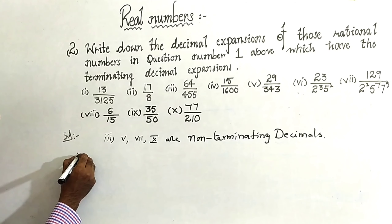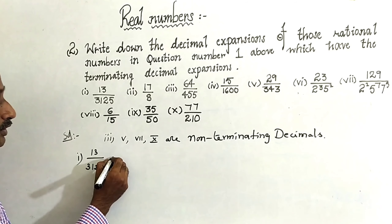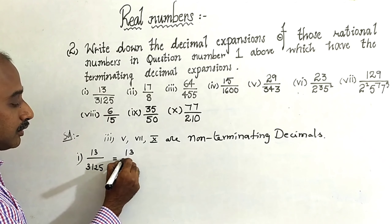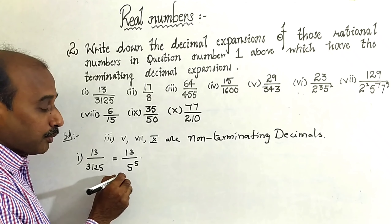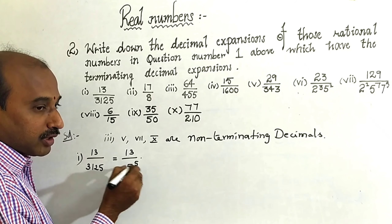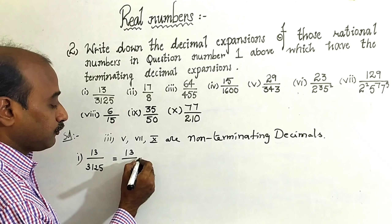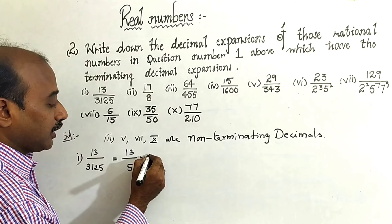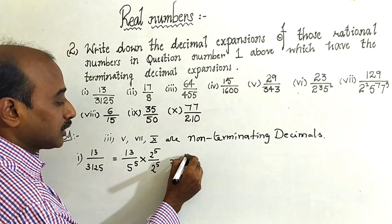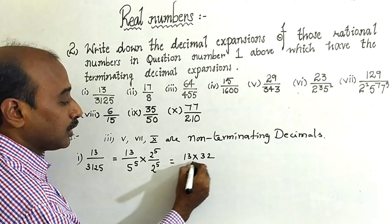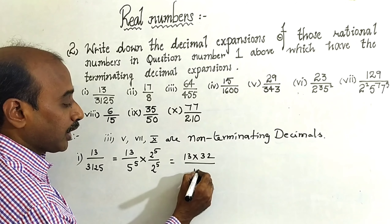Now come to Roman numeral one: 13 by 3, 1, 2, 5 — this you can write as 13 by 5 to the power 5. In the denominator, we can make it a power of 10, which makes it very easy to convert into decimal form. Therefore, multiply by 2 to the power 5 over 2 to the power 5. This gives 13 into 2^5 equals 32, over 5^5 into 2^5, which you can write as 10 to the power 5.